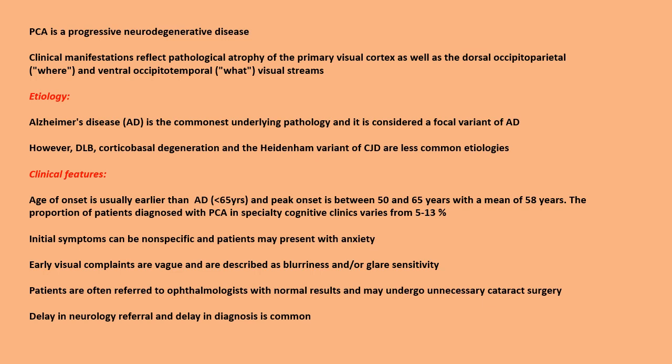Clinical manifestations of PCA reflect pathological atrophy of the primary visual cortex as well as the dorsal occipital parietal 'where' and ventral occipital temporal 'what' visual streams. Regarding etiology, Alzheimer's disease is the commonest underlying pathology and PCA is considered a focal variant of Alzheimer's disease. Less common etiologies include DLB, corticobasal degeneration, and the Heidenhain variant of CJD.